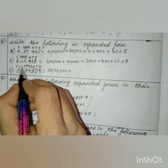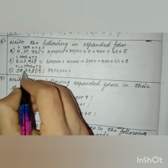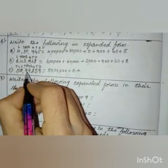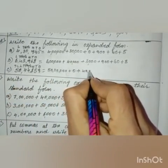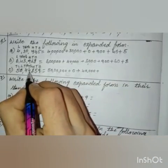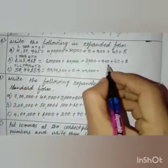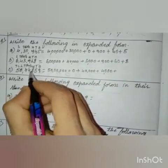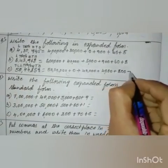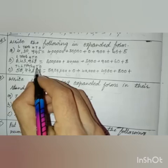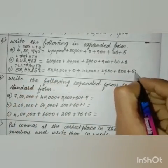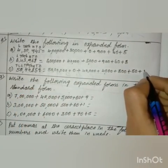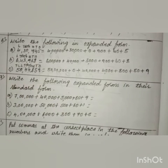0 is in the lakhs place, and 0 into any number is 0, so 0 into 1 lakh is 0. Plus 4 into 10,000 is 40,000, plus 4 into 1,000 is 4,000, plus 8 into 100 is 800, plus 5 into 10 is 50, plus 9 into 1 is 9. This is the expanded form.